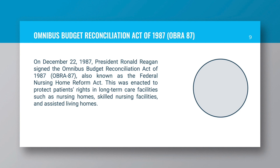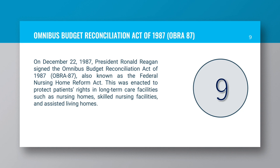OMNIBUS Budget Reconciliation Act of 1987 (OBRA 87): On December 22, 1987, President Ronald Reagan signed the OMNIBUS Budget Reconciliation Act of 1987, also known as the Federal Nursing Home Reform Act. This was enacted to protect patients' rights in long-term care facilities, such as nursing homes, skilled nursing facilities and assisted living homes.